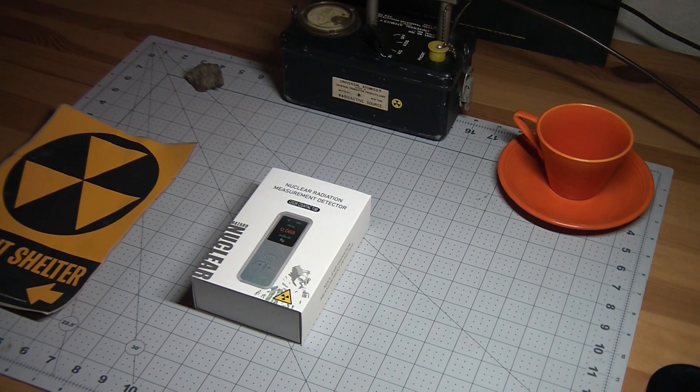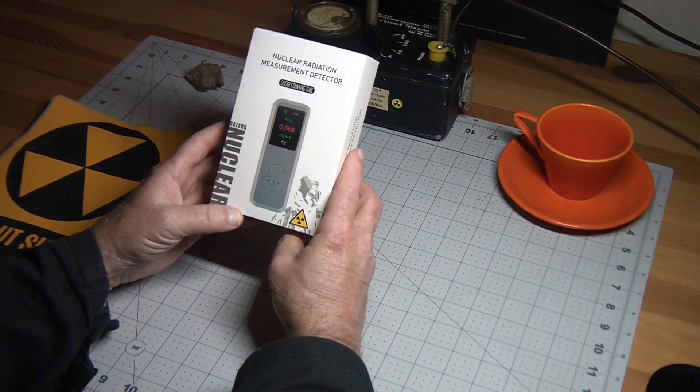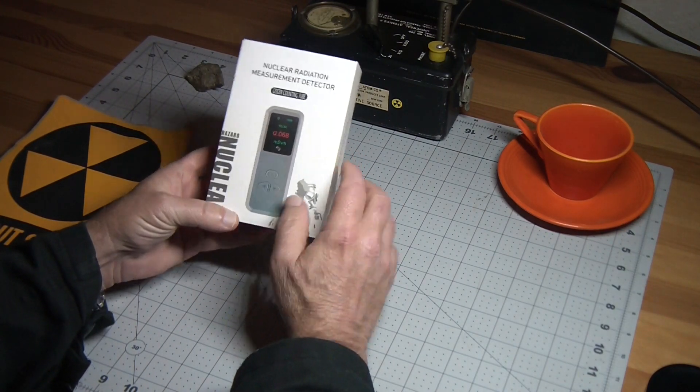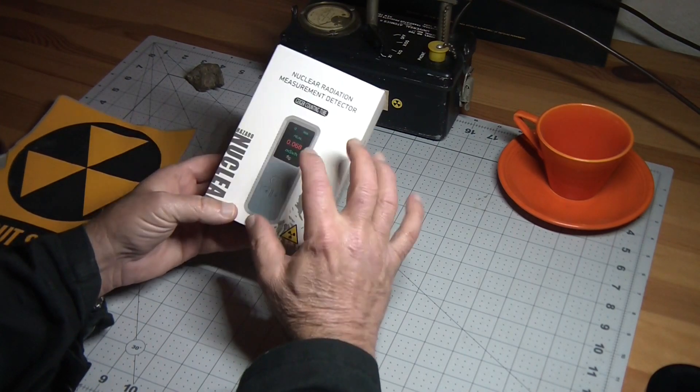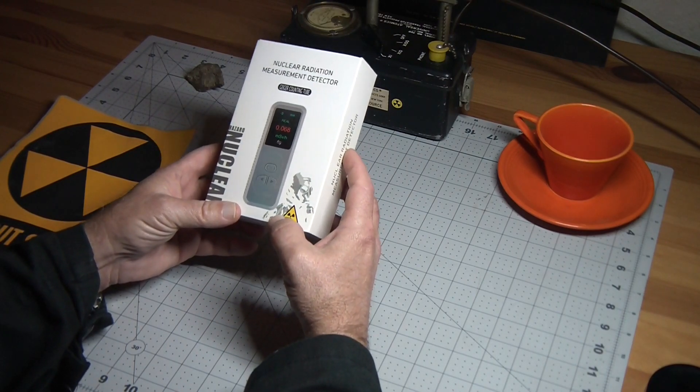These were purchased from AliExpress and they claim to have an actual Geiger counter tube in them that's the full length of the unit, which should provide good sensitivity.